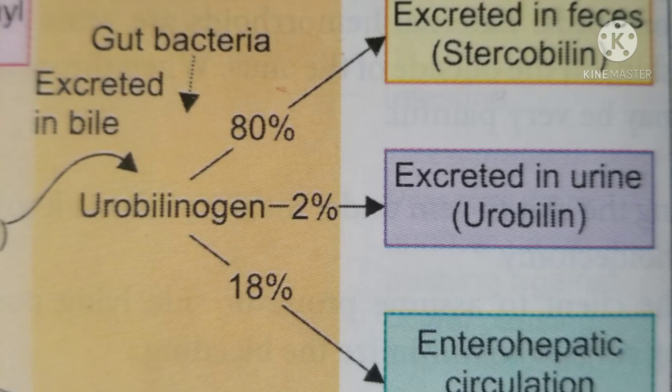This urobilinogen in the small intestine, mixing with gut bacteria, is handled as follows: 80% is excreted in the feces as stercobilin, 2% is excreted in the urine as urobilin, and the remaining 18% re-enters the enterohepatic circulation, completing the same cycle again.